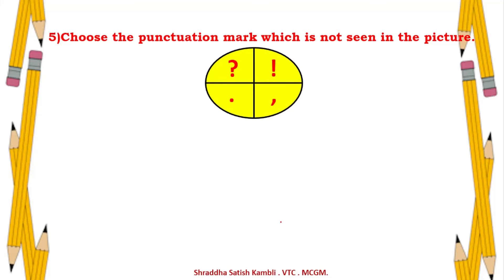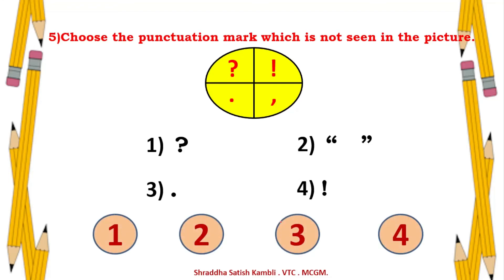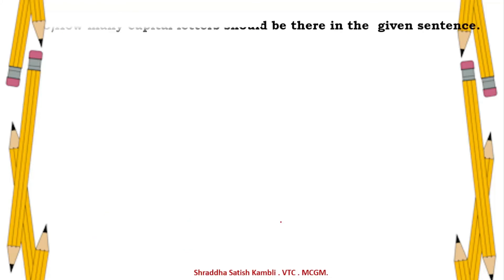Fifth example: choose the punctuation mark not seen in the picture. The picture shows a question mark, a full stop, and an exclamation mark. The punctuation mark that is not there is option 2 — the double inverted commas or speech marks.